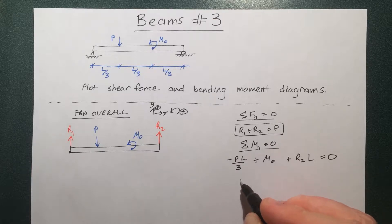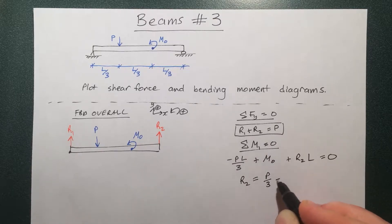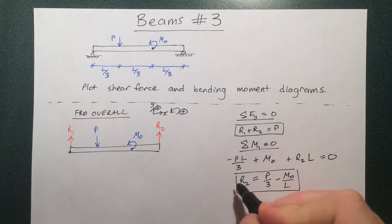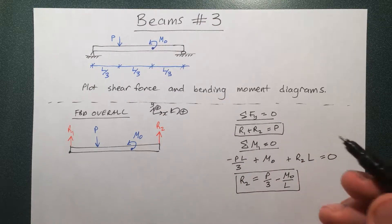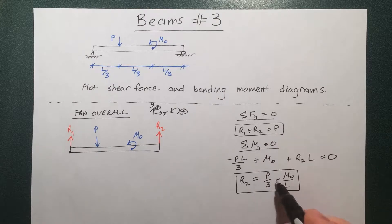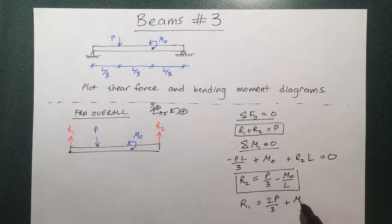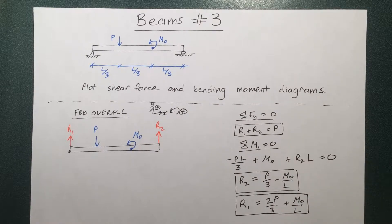So we can solve this and R2 equals this value, and you can plug R2 into here and solve for R1. So R1 is just P minus R2, which is P minus this whole contraption.